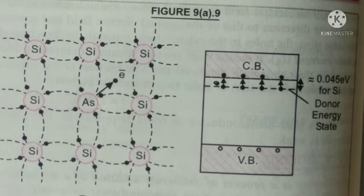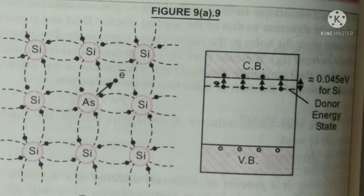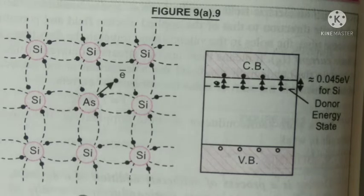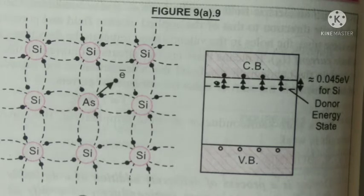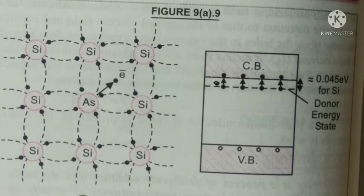But overall, the total number of holes in N-type semiconductor is relatively small than the total number of electrons. Hence, in N-type semiconductor, electrons are majority carriers and holes are minority carriers.